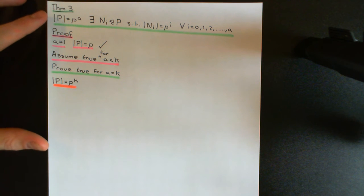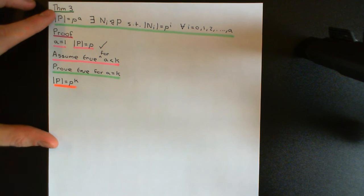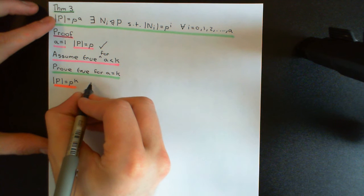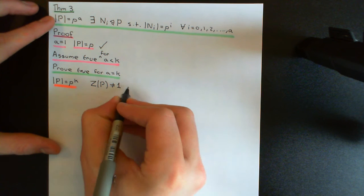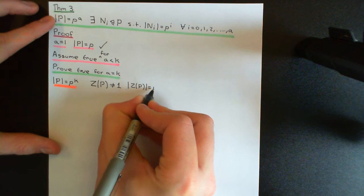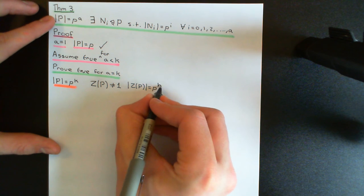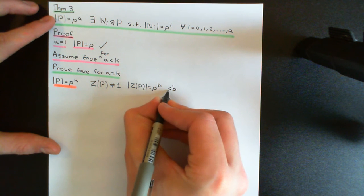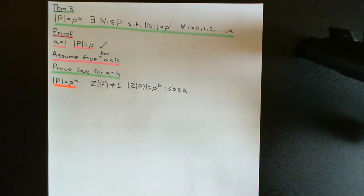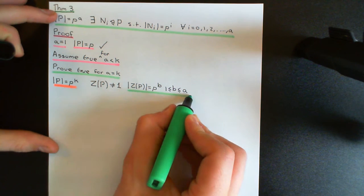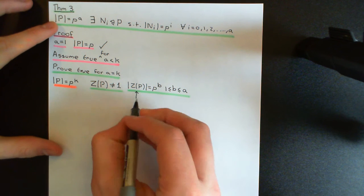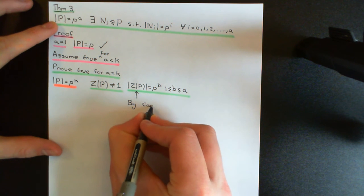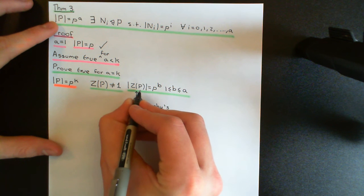Let me make this rigorous. We need to find a normal subgroup of size p to quotient out by. We're going to use Theorem 1: the centre of our p-group is not equal to the trivial subgroup. That means the order of the centre is some power of p, say p to the power of b, where b is greater than or equal to 1 and less than or equal to a — by Lagrange's theorem it must have a power of p as its order, and it can't have order 1. We can now apply Cauchy's theorem to the centre of the group to find a subgroup of the centre of order p.